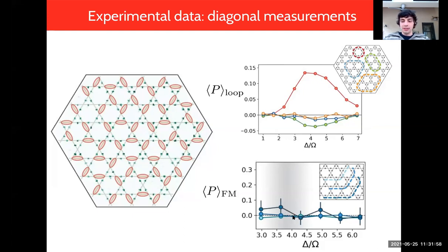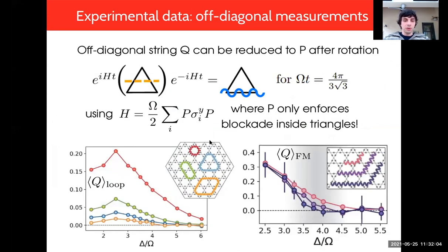We can observe that we see strong measurements for these loop observables which confirm that in this regime we get an effective dimer model. By calculating these open string FM order parameters we see that we get a very small result as would be expected for a deconfined phase. We can also measure off-diagonal strings by doing a particular quench of the blockade radius and we see similar results.